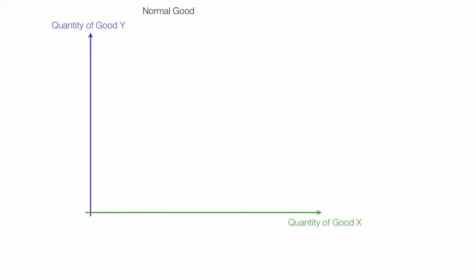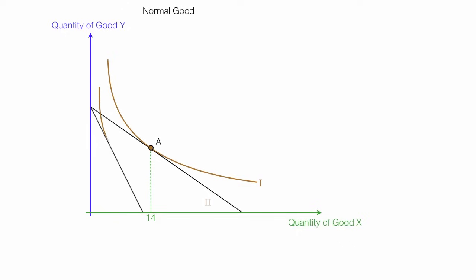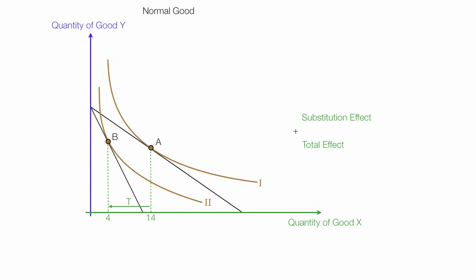I'm going to show you the income and substitution effects for a normal good with a price increase. The consumer starts at point A and will consume a quantity of X of 14 units. The price of X goes up, so the consumer will consume less of quantity of X. The budget line is going to rotate inward and the consumer will be able to buy less. I will draw in another indifference curve and the consumer will consume at point B and consume 4 units of good X. So the total effect is that distance there, and I'll break that into the substitution effect and the income effect.